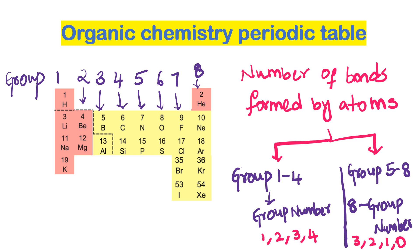Atoms located in groups 1 to 4 form bonds which are equal to their group number, while to calculate the number of bonds formed by atoms in groups 5 to 8, we should subtract the group numbers from 8.